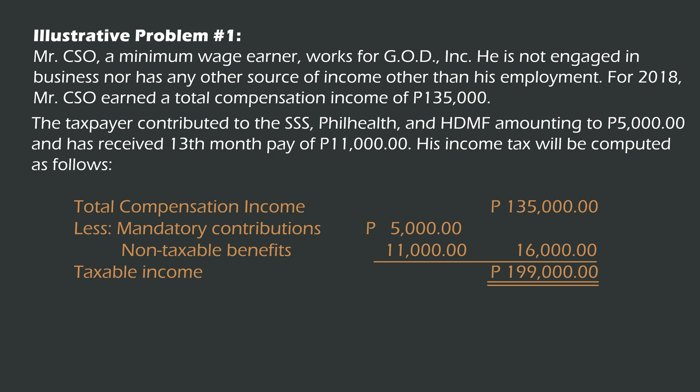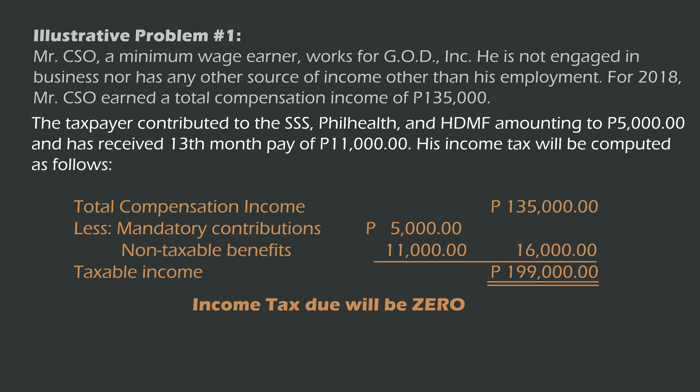His income tax will be computed as follows: total compensation income of 135,000 less all deductions of 16,000, so total taxable income is 119,000. But income tax will be zero. My point in showing this illustration is to emphasize that minimum wage earners shall be exempt from the payment of income tax. The holiday pay, overtime pay, night differential, and hazard pay received by such earners are likewise exempt.